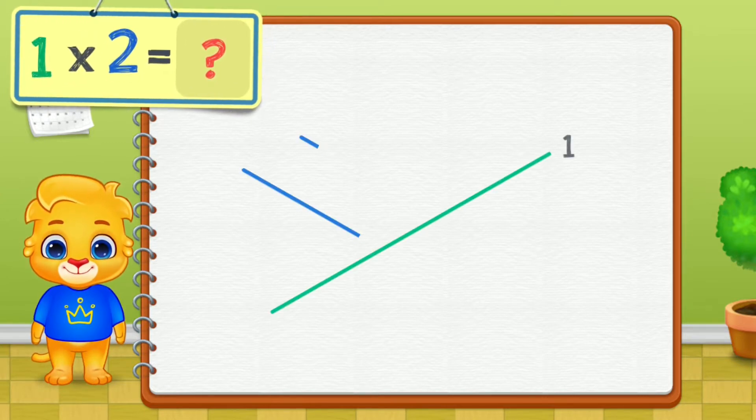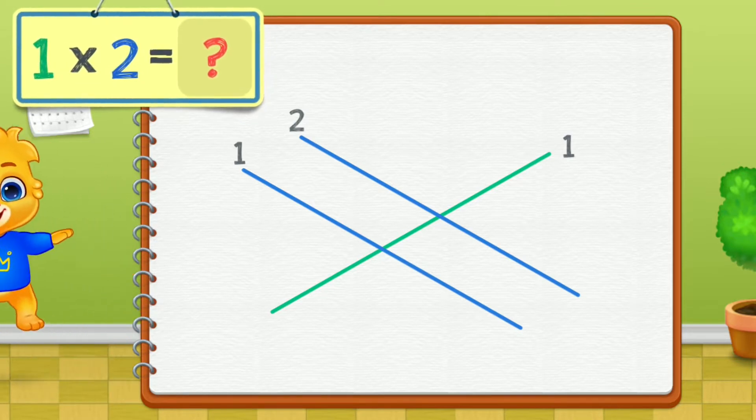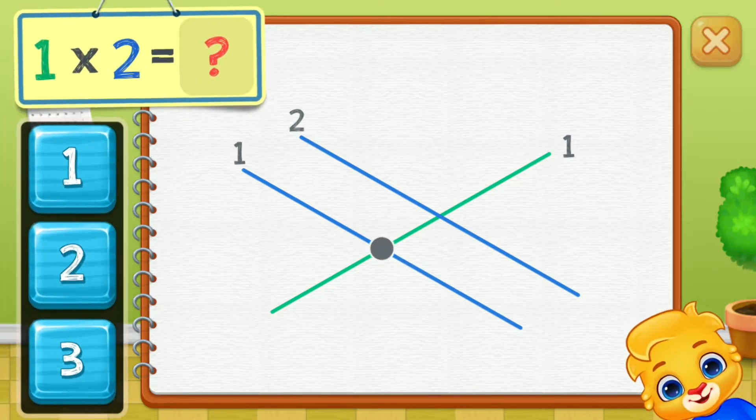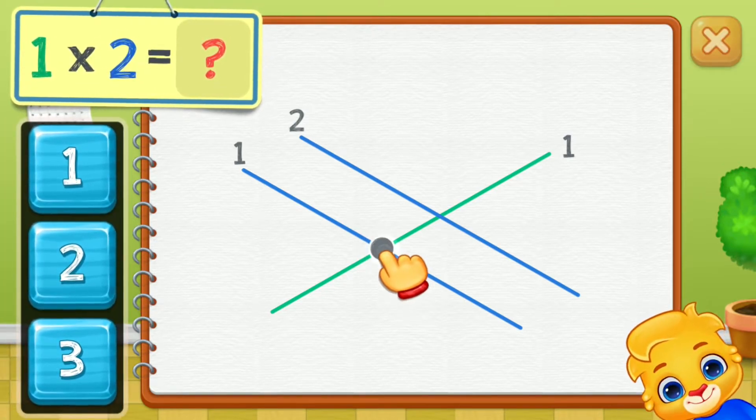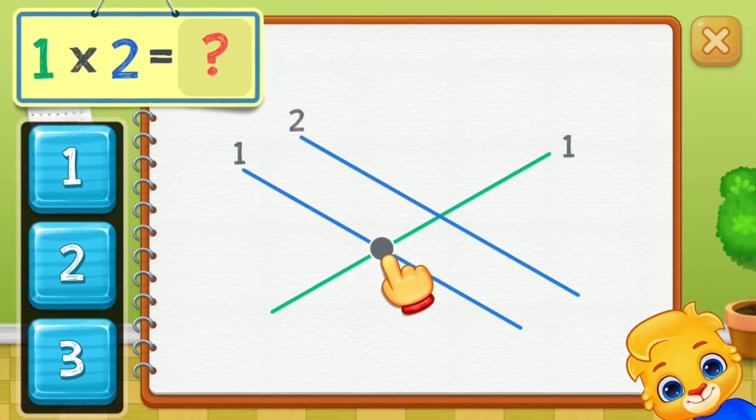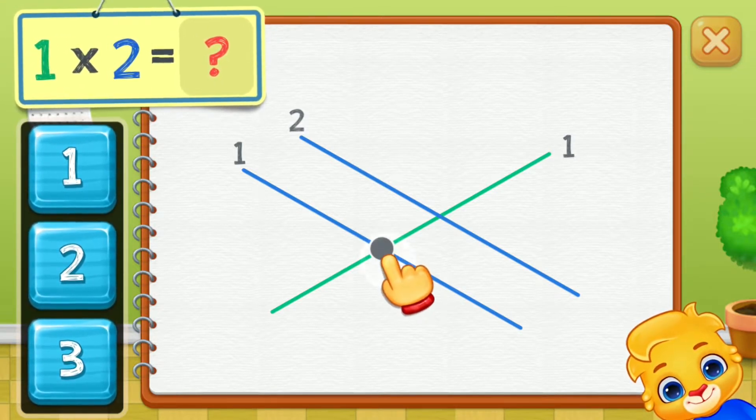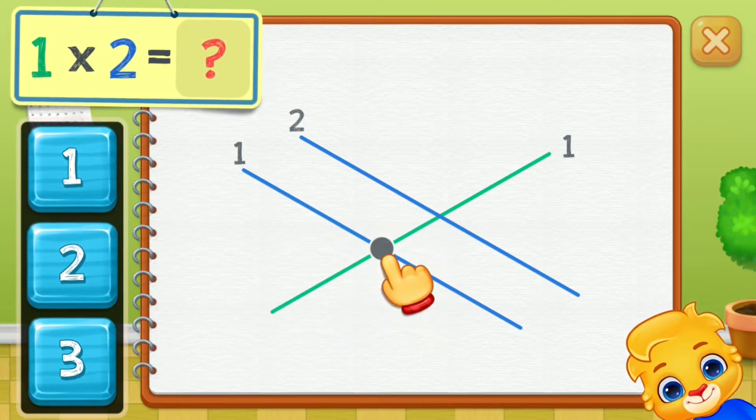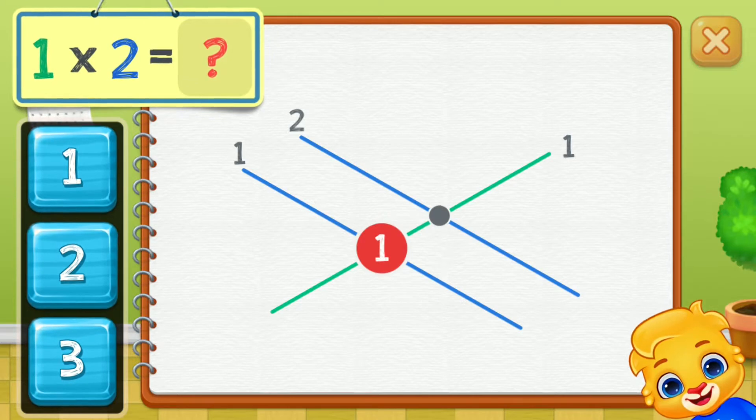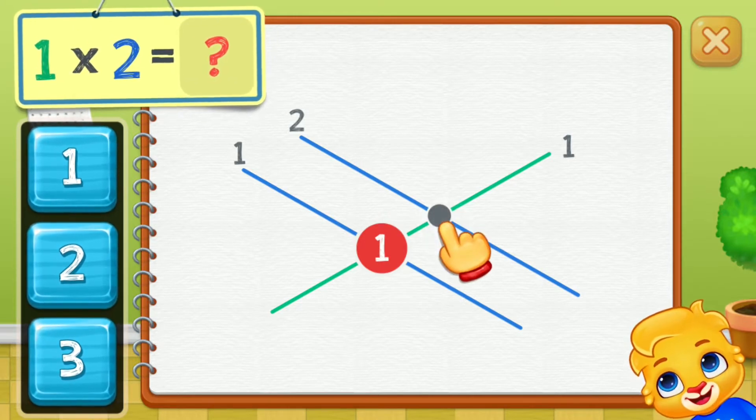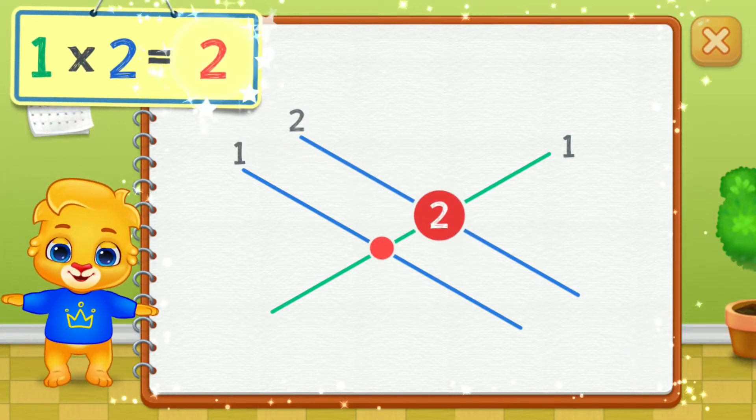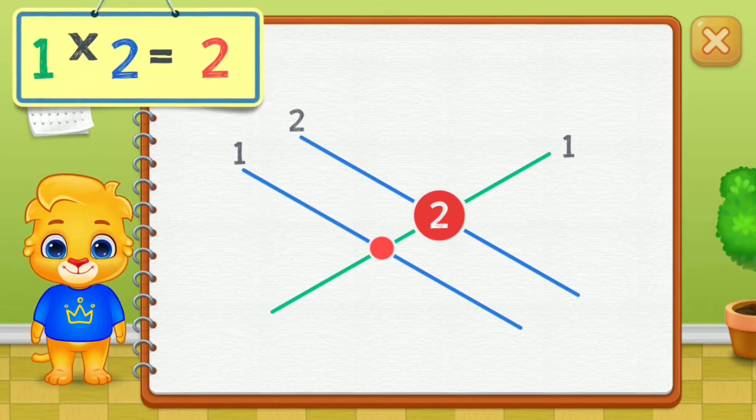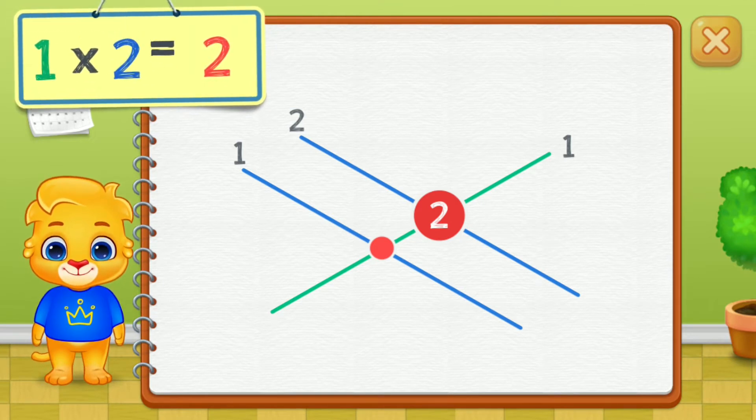1 times 2 equals... Touch intersection points. 1, 2. 1 times 2 equals 2.